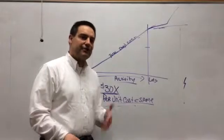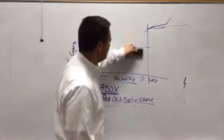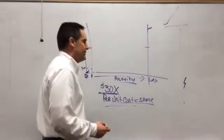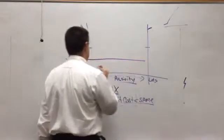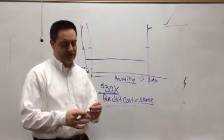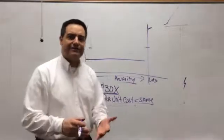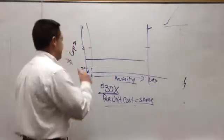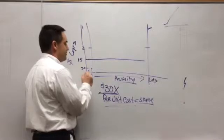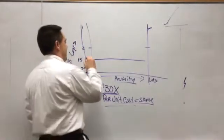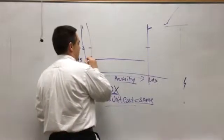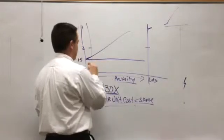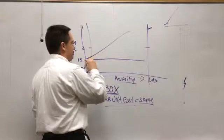In addition to fixed and variable cost, we also have something called a mixed cost. Mixed costs are things like your telephone bill or utility bill, which sometimes have a base rate. Utilities are a classic example — they charge a connection charge of, say, $15 per month whether you use any utilities at all. Then as you increase your usage, there's a variable rate such as kilowatt hours. So it has both a fixed component — the $15 fixed charge — and a variable component that goes up with usage.